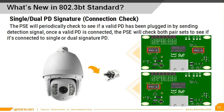The new PoE standard supports two types of PD configurations: single signature PD and dual signature PD. The PSE must support both single and dual signature PD. In a single signature PD, the same detection signature, classification signature, and MPS are shared between both pair sets. Whereas in a dual signature PD, each pair set has its own detection signature, classification signature, and MPS. The benefit of dual signature PD is that independent monitoring on each pair set also allows for power saving, where one of the dual signature PD configurations may choose to go into standby mode, whereas the other may need to continue operating at full power.